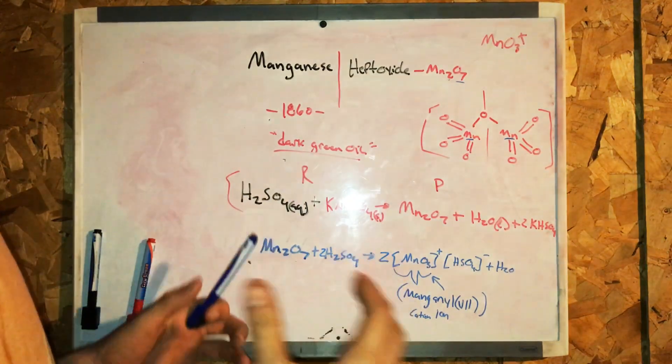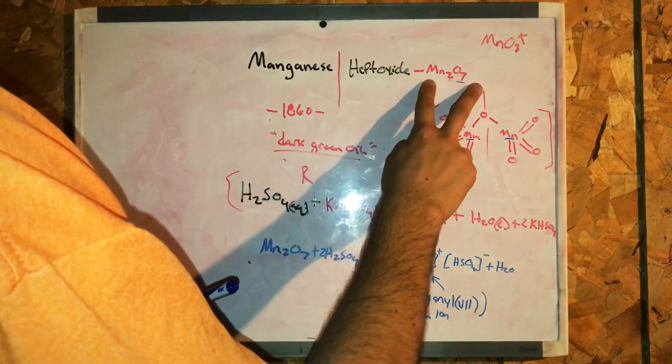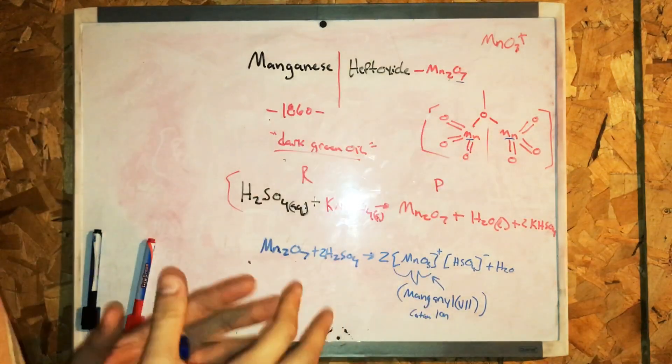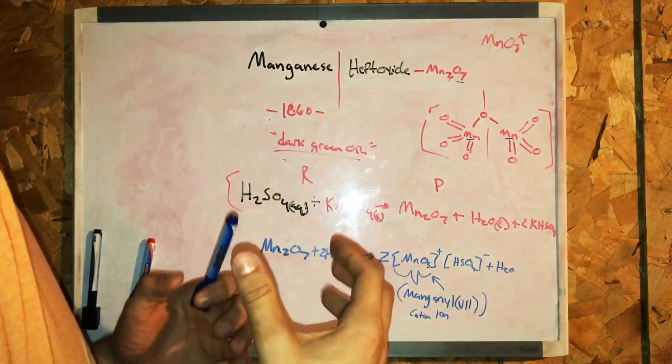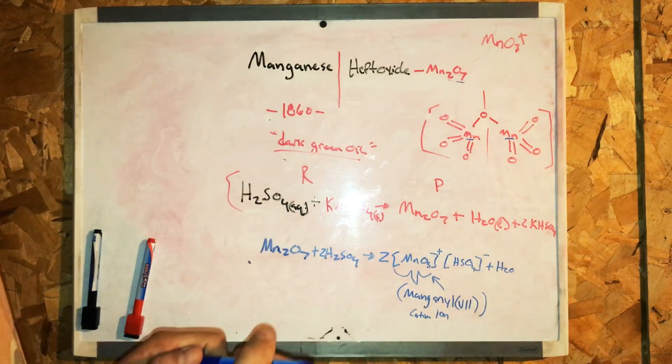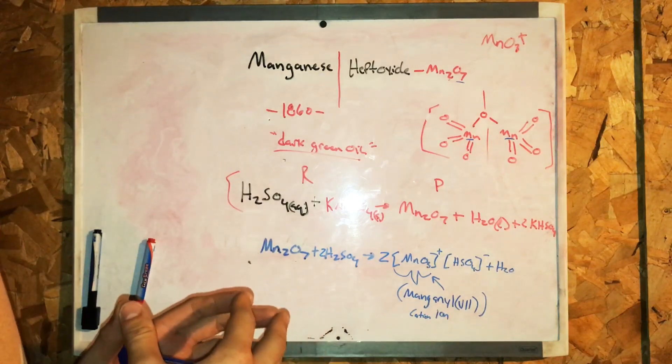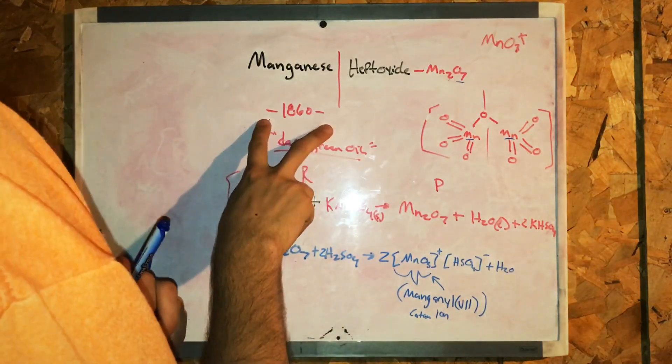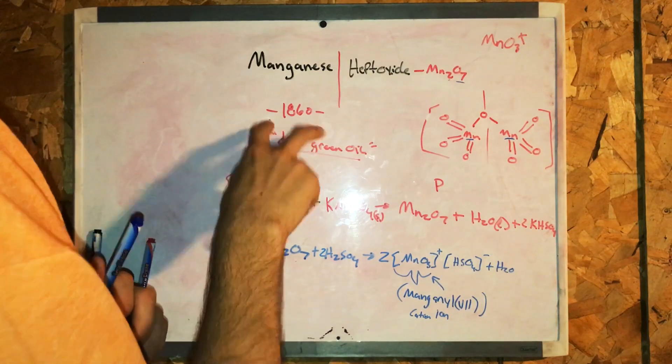Okay, so manganese heptoxide is an inorganic compound with the formula here. This volatile liquid is highly reactive and more often discussed than prepared due to the danger of this molecule. It is a dangerous oxidizer and first described in 1860.